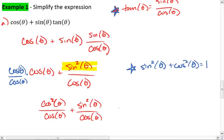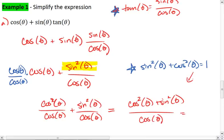We have like denominators. We can add the numerators, getting cosine squared theta plus sine squared theta over cosine theta. We know from our Pythagorean identity that cosine squared plus sine squared is 1, so we get 1 over cosine theta.